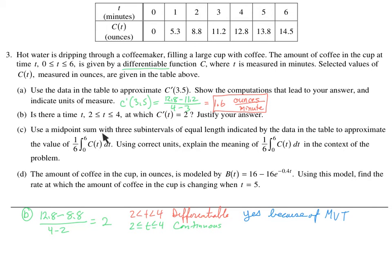All right. Next, use midpoint sum with three sum intervals of equal length to indicate by the data on the table to approximate this. Use correct units to explain that in context of the problem. So let's do midpoint formula, and let's describe it. All right. Let's start with the midpoint formula. All right. Let's do it here at the bottom. I'm going to do C here. To do C, we're doing midpoint formula. So we have how many intervals? Three subintervals. Equal length.